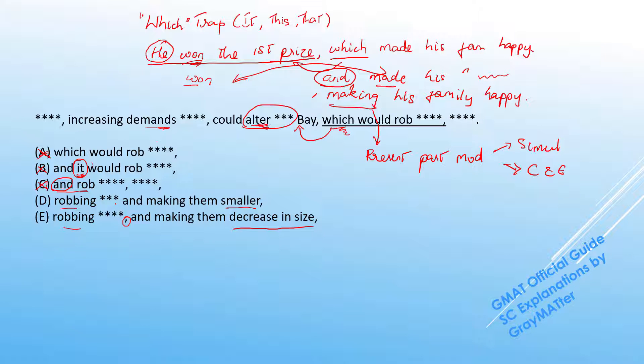We can see that there is a comma which is preceding the and in E but there is no comma in D. What does this mean? Generally we know that and is a trigger for the concept of parallelism, correct? If I have an and here, we see that it's connecting these two actions robbing and making.